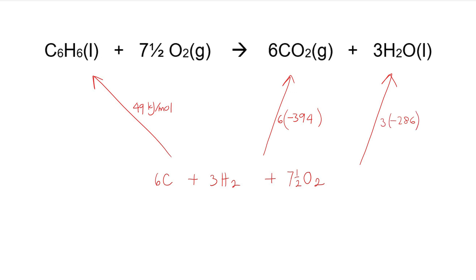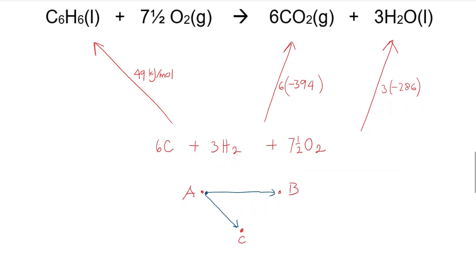Write down all the enthalpy of formation values. Now imagine we want to get from this point to this point, but we want to take the long way. So we have 3 spots here: A, B, and C. We want to go from A to B, but we are taking a detour to C, so we have to start at A and then go to C and then go to B.